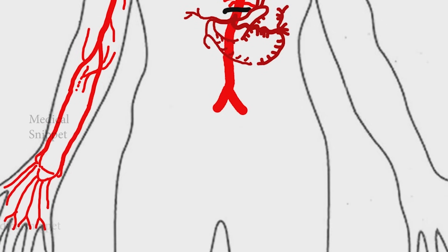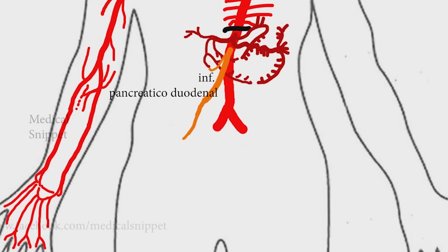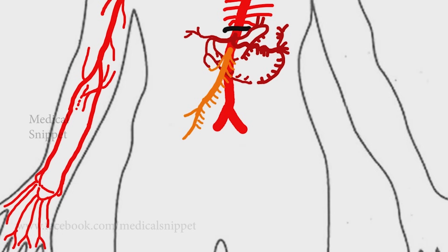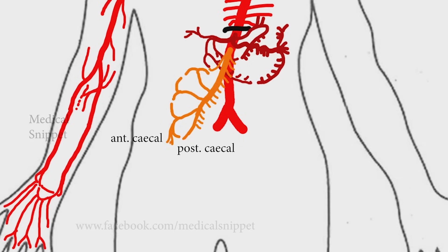The superior mesenteric artery arises at the level of the first lumbar vertebra. It supplies the intestine from the lower part of the duodenum through two-thirds of the transverse colon, as well as the pancreas — corresponding to the embryonic midgut. It gives rise to the inferior pancreaticoduodenal artery, jejunal arteries, ileal arteries, ileocolic arteries, right colic, and middle colic arteries. The ileocolic artery gives rise to anterior and posterior cecal arteries, and the appendicular branch arises from the posterior cecal artery.